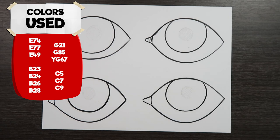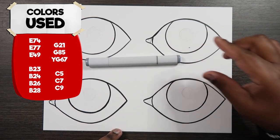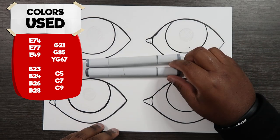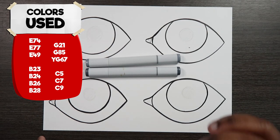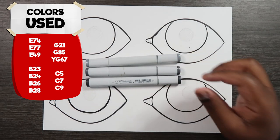And for the gray eye I'm going to be using C5 cool gray number 5, C7 cool gray number 7, and C9 cool gray number 9.